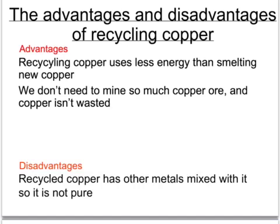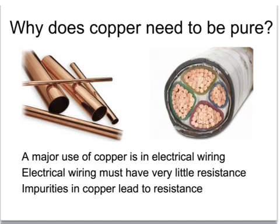One of the disadvantages of recycling copper is that the copper item might have other metals attached to it. These mean that when it's melted down, it will make impure copper, which still has to be purified in order for it to be used, for example, for electrical cables. The reason why copper needs to be so pure is that one of its major uses is in electrical wiring. Electrical wiring must have very little resistance, and impurities in the copper cause resistance, creating a heating effect in the wire which is dangerous. So all of the impurities must be removed by electrolysis.